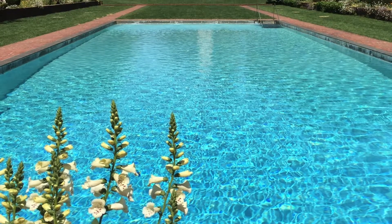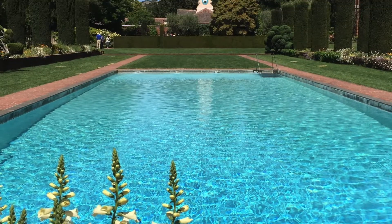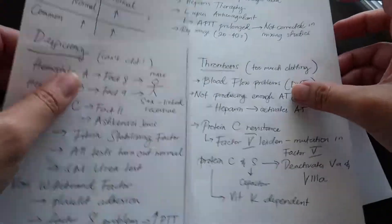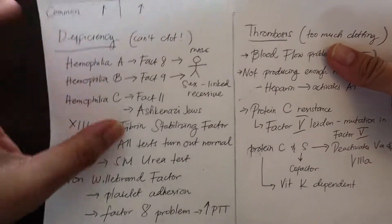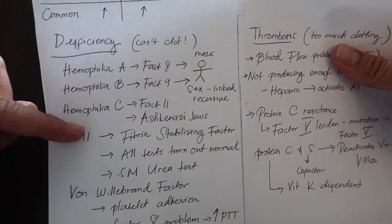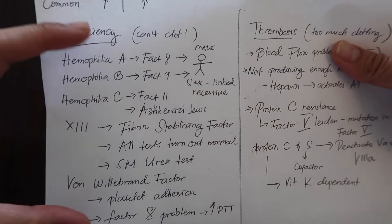Today we're going to talk about diseases in secondary hemostasis. I've divided it into two parts: deficiency diseases, which means you don't have enough or something's not right with your factors.